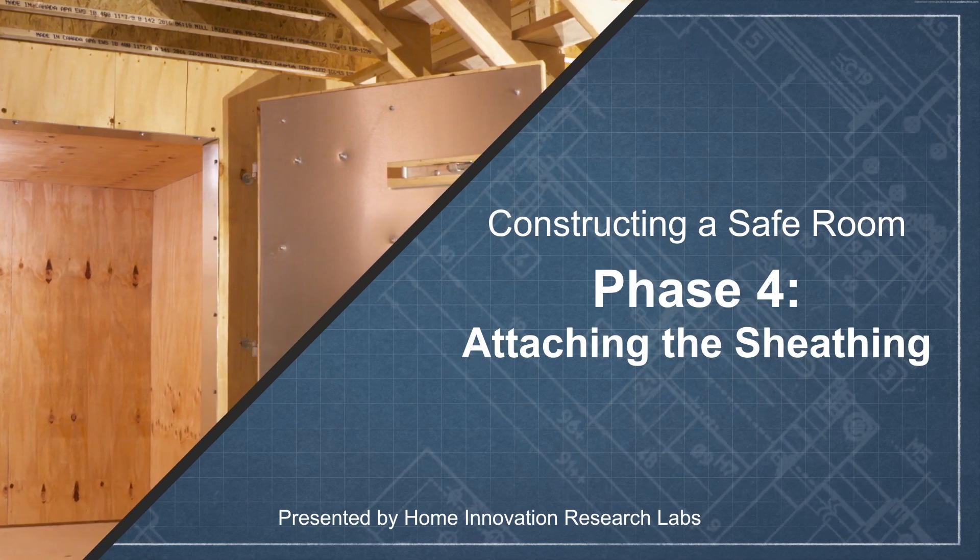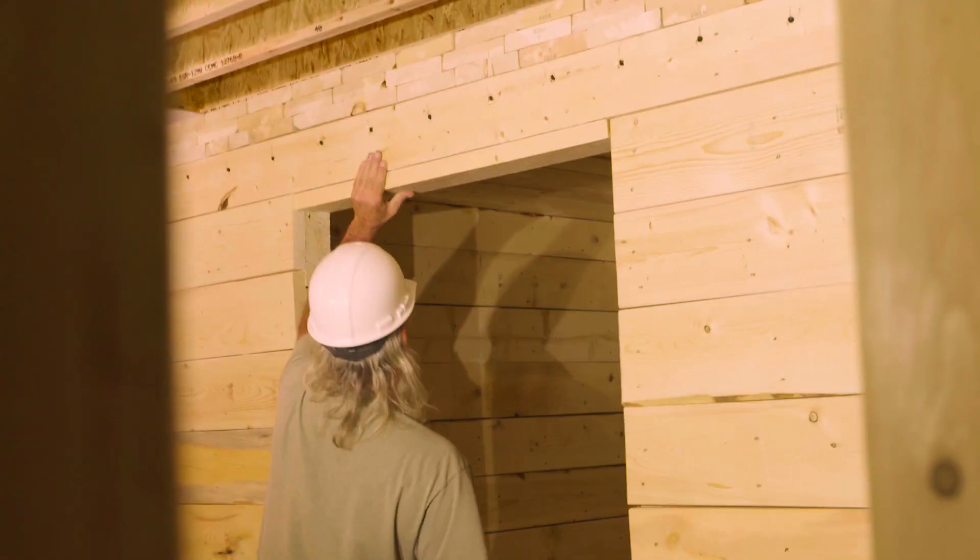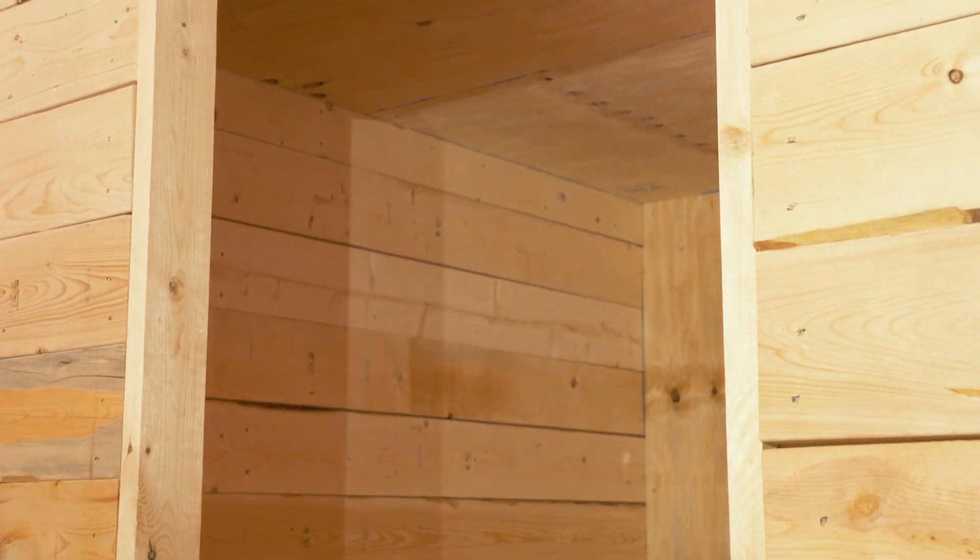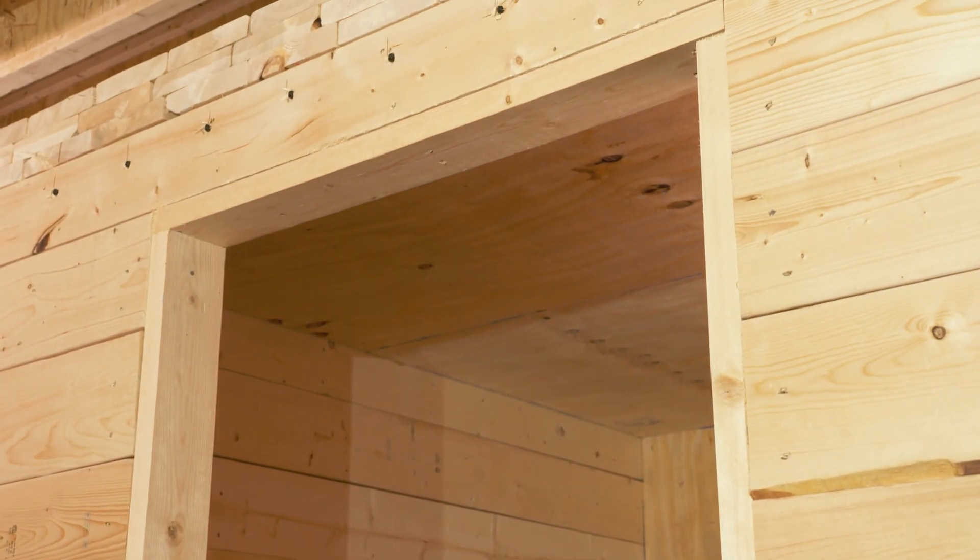Before the plywood sheathing goes up, the door jamb must be installed. The door jamb is made from three 2x6s: two for the side jams and one for the top.